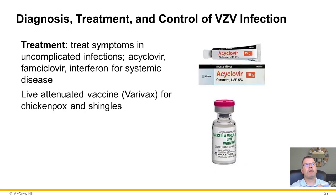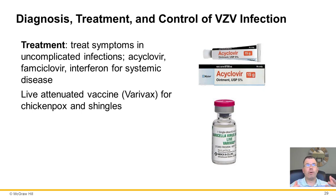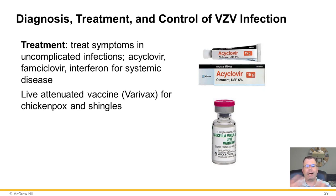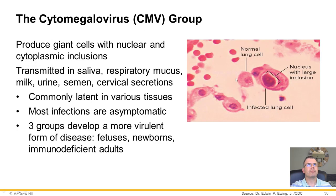Treatment is typically aimed at symptoms. You can get acyclovir, famciclovir, or other antivirals to lessen symptoms and speed up healing. There is a varicella live vaccine to eliminate the potential of getting chickenpox in the first place — if you don't get chickenpox, you don't have the risk of shingles. There is also a separate shingles vaccine to help prevent shingles if you did get chickenpox as a kid.